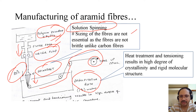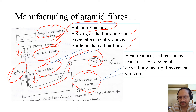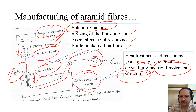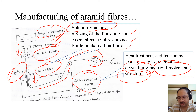This is solution spinning. Sizing of the fibers is not essential because the fibers are not brittle, so the sizing step is absent and we can spin directly in the solution. There is then a heat treatment and tensioning step, which results in crystallinity and a rigid molecular structure. Tensioning — as seen in all fiber production — imparts the longitudinal elastic modulus and increases the degree of crystallinity.